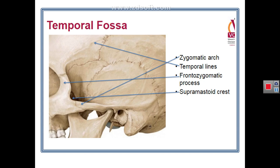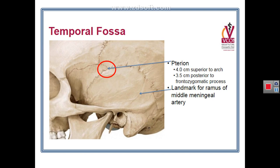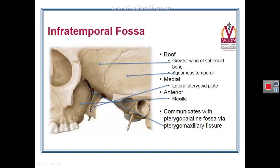A closer view to this region requires removing the zygomatic arch. With the zygomatic arch removed, we can see the greater wing of sphenoid and the infratemporal crest of the greater wing of sphenoid. This infratemporal crest separates the temporal surface of the greater wing of sphenoid from its infratemporal surface, which forms the roof of the infratemporal fossa. The infratemporal crest is therefore the boundary between the temporal and infratemporal surfaces of the greater wing of sphenoid.